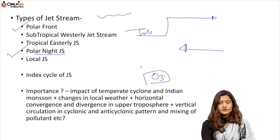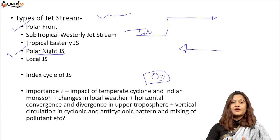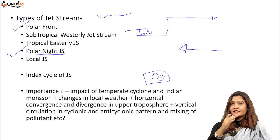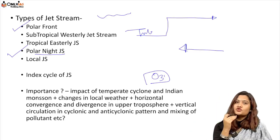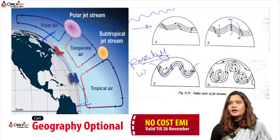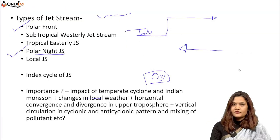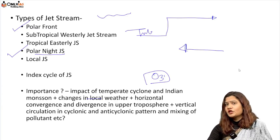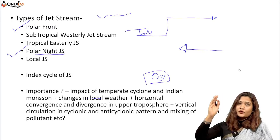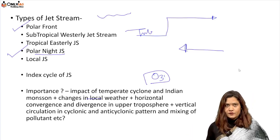The importance of jet streams: they impact temperate cyclones, making them very stormy and strong. If the jet stream is exactly above a tropical cyclone, it gives it additional strength. They cause changes in local weather. Horizontal convergence and divergence in the upper troposphere causes mixing — this is why anthropogenic pollutants mix and reach the stratosphere. Jet streams are also very important for the onset of the monsoon.